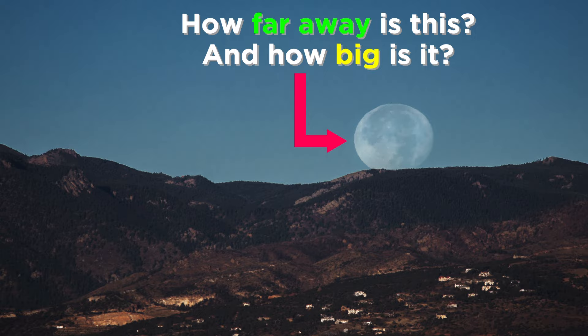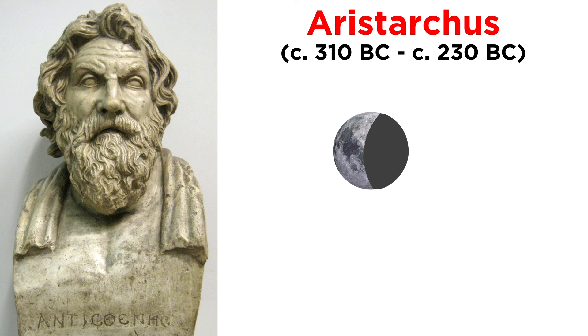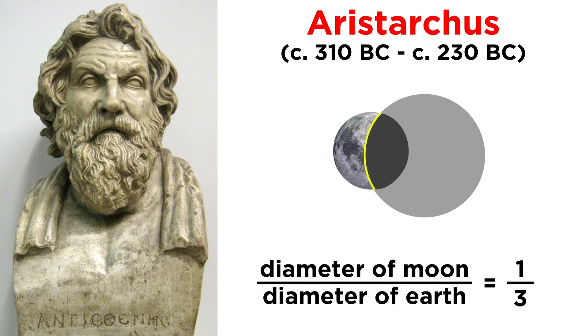Take the moon for example. Around the time of Eratosthenes, another Greek named Aristarchus did some similar work. He looked at the shadow of the earth on the moon during a lunar eclipse, and by comparing the curvature of the shadow and the moon itself, he deduced that the moon must have a diameter around one-third that of earth.